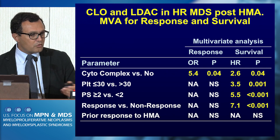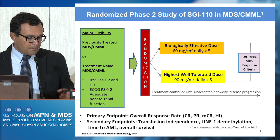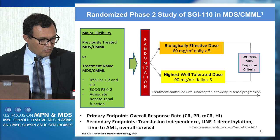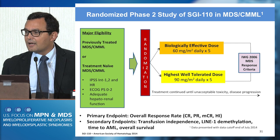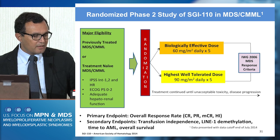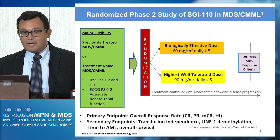Bart already showed us data on the second-generation hypomethylating agent — I'm going to call it SGI-110. We've used this drug quite a bit; this is data from a presentation at ASH a couple of years ago. Very well tolerated. From the original trial, it appears that this dinucleotide form of cytarabine may have some activity in patients with hypomethylating failure MDS. There's a phase three trial that is opening right now looking at this drug in this context of failure.